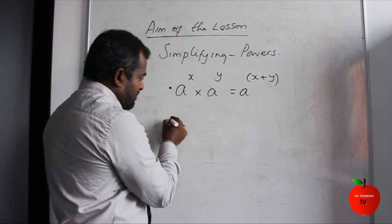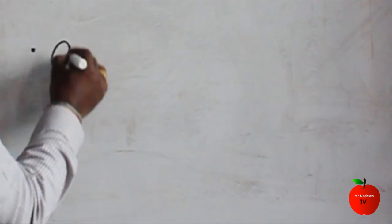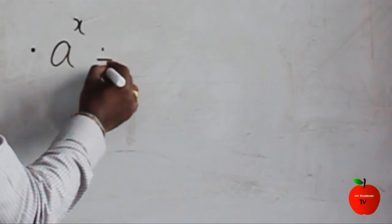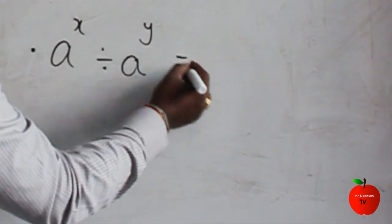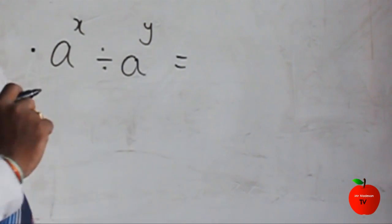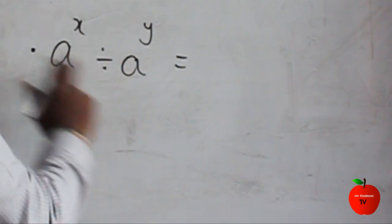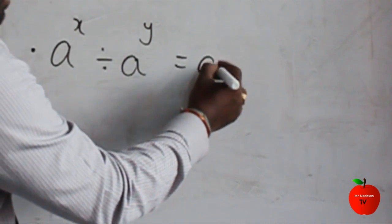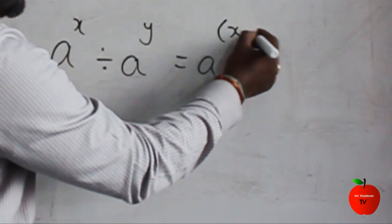The next rule we are looking at: when the base is equal and you divide, we think about what will happen to the power. Here the base is a, and here the base is a. When dividing, you have to subtract the powers.